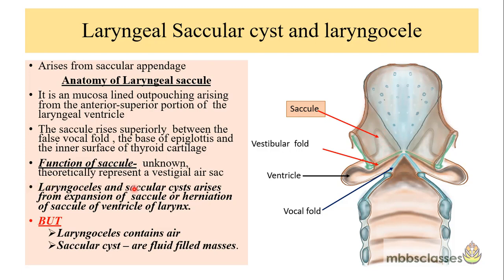Laryngoceles and saccular cysts arise from the expansion or herniation of the saccule of the ventricle of the larynx, but there is a basic difference between the two. Laryngoceles contain purely air — the presence of air is confirmatory for diagnosing laryngoceles. Saccular cysts, on the other hand, are fluid-filled masses.